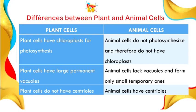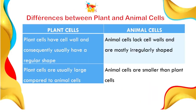The differences between plant and animal cells: plant cells have chloroplasts for photosynthesis but animal cells do not and therefore cannot photosynthesize — that is why they depend on plant cells for food. Plant cells have large permanent vacuoles while animal cells lack vacuoles or form only small temporary ones. Plant cells do not have centrioles while animal cells have centrioles. Plant cells have a cell wall and consequently have a regular defined shape, while animal cells lack cell walls and are mostly irregularly shaped. Plant cells are usually larger than animal cells.